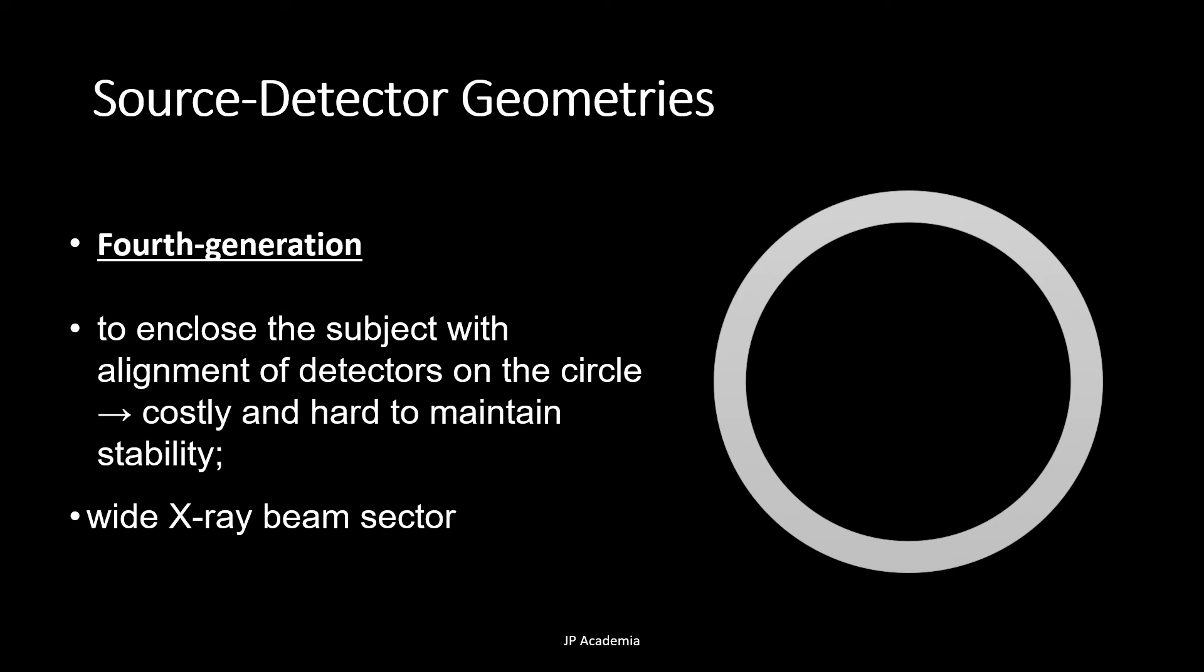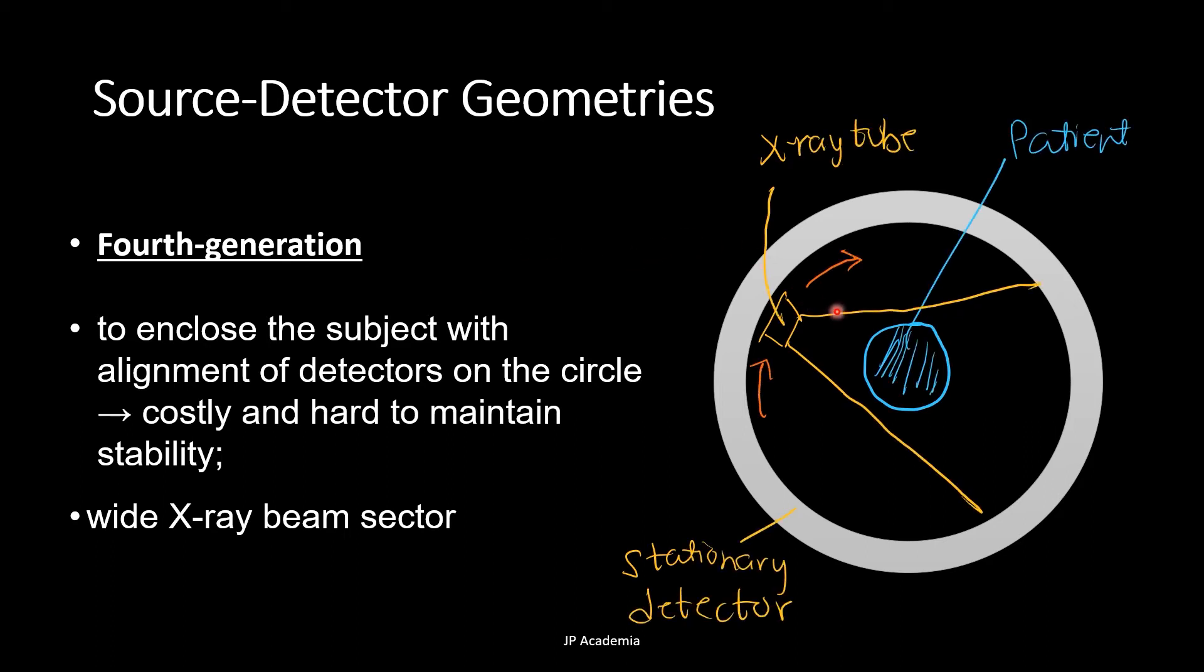For this lecture, this is the last generation that I will present, so the fourth generation. It has a rotating X-ray source, and a continuous 360 degrees ring of detectors. And a rotating only of the X-ray tube is observed, thus it reduces the time for scanning, and it has a stabilized composition.